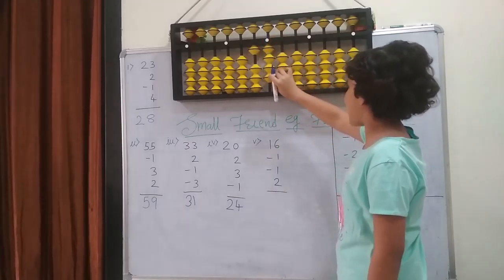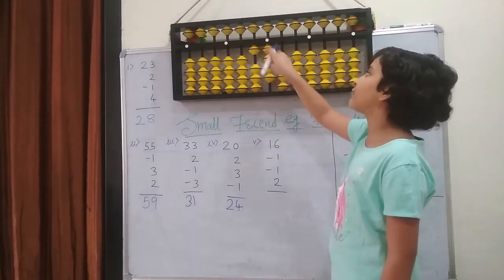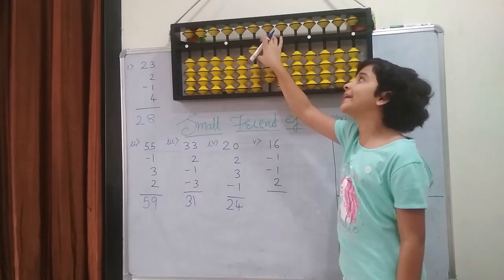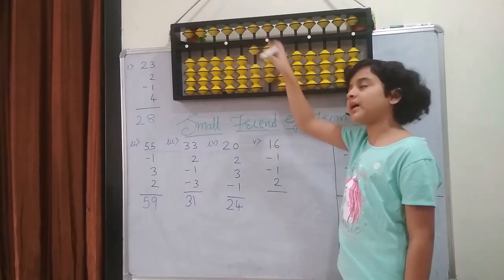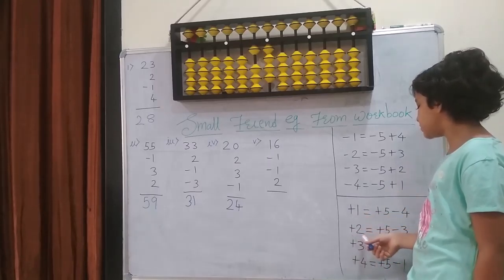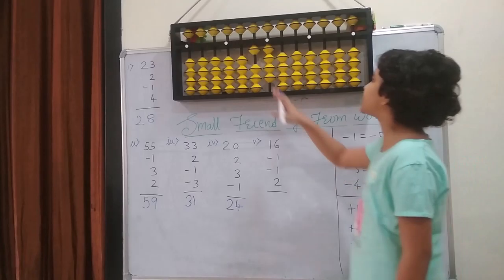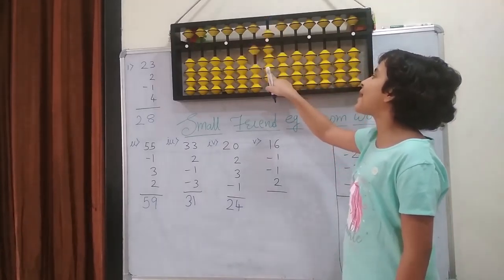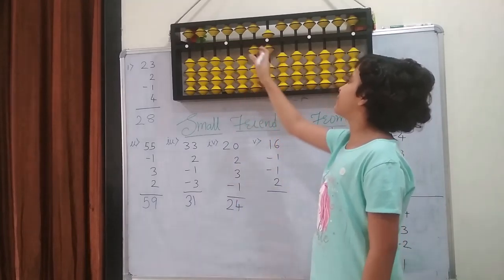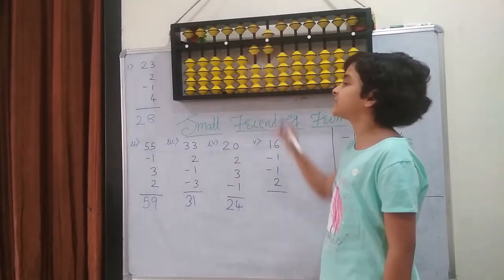Then I am going to add 2. I cannot because I have no beads left. I have to check if the upper bead is available or not for addition. This time it is available, means I can use the addition formula, which is plus 2 equals to plus 5 minus 3. Plus 5 and minus 3: 1, 2, 3. So the answer is 1 and 5 and 1, which is 6 — that is 16.